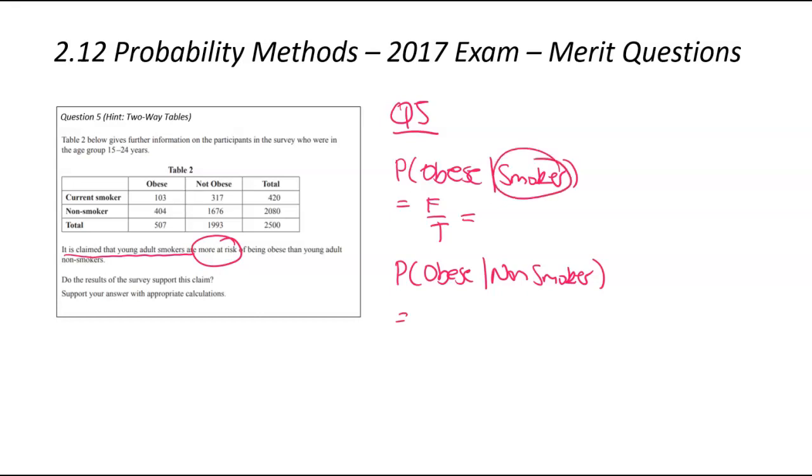So let's get into the questions. So first thing is we need to find out the two probabilities. So what's the probability of being obese given you are a smoker? So we need to find that, and we need to compare that with the probability of being obese given you are a non-smoker. So we need to think about our F over T approach for both questions. So we, in this first probability question, we only care about smokers, and in which case that's 420 of them. So that's our denominator. So of those 420 smokers, how many of them are obese? 103.